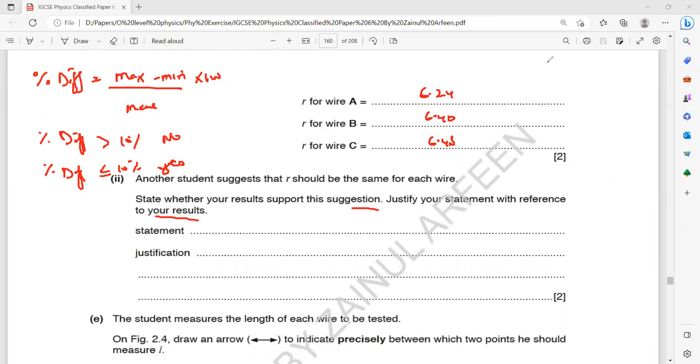The maximum value is 6.48. What is the minimum value? That is 6.24 divided by mean. What is the mean of these three? 6.24 plus 6.40 plus 6.48. Take a mean of that. 6.24 plus 6.40 plus 6.48, that divided by 3. So 6.37 and into 100.